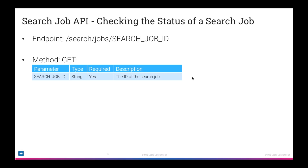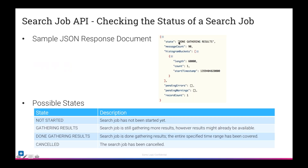Once you've created a search job, the next thing you need to do is check its status. The endpoint is the same — slash search slash jobs — but you include the ID, and this is a GET. The response will include a state telling you where it is in the search, the message count, histogram information, any errors or warnings, and how many total records were returned. The possible states are: has not started, gathering results (still running — results are not complete), done gathering results (complete — you can now retrieve the full data), and canceled.